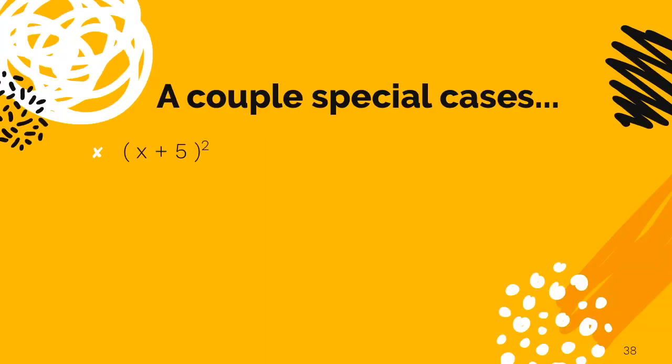Now, what would math be without a couple special cases? When you square a binomial, for this example, x plus 5, that quantity squared, I need you to remember that it's not x squared plus 25.